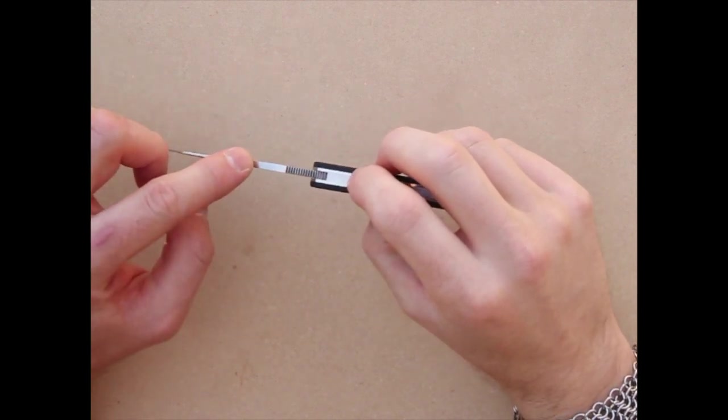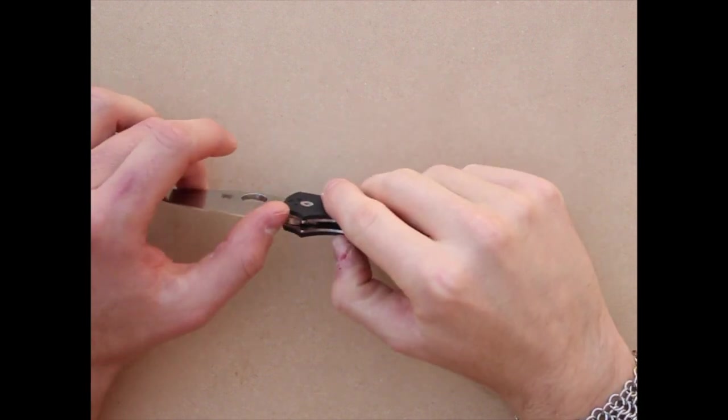Got jimping right here on the back of the spine to aid in traction of the thumb, as well as in the finger choil area.